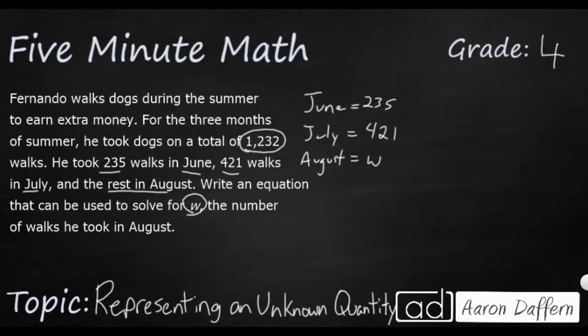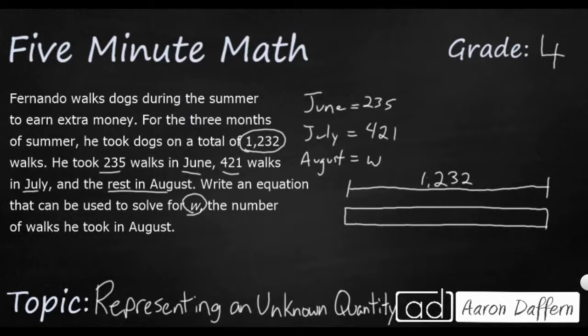Let's see if we can perhaps draw a strip diagram. Sometimes that helps me to visually see what's going on here. So I have a total of 1,232. Those are all my walks put together. And they are in three months. The months are not exactly equal, but I'm just going to kind of cut those in thirds.